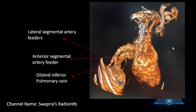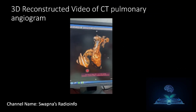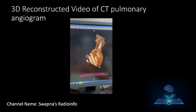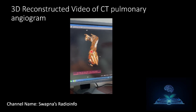This is a 3D reconstructed image. You can see two arterial feeders from the lateral segmental artery and one from the anterior segmental artery. The dilated inferior pulmonary vein and the vascular nidus are clearly visible. The 3D reconstructed video of the CT pulmonary angiogram similarly demonstrates the arterial feeders, dilated inferior pulmonary vein, and vascular nidus.